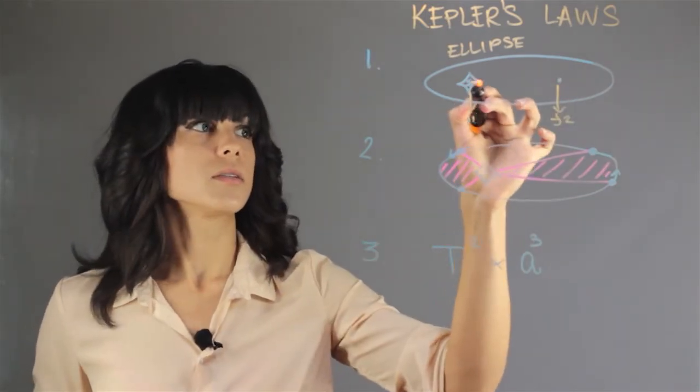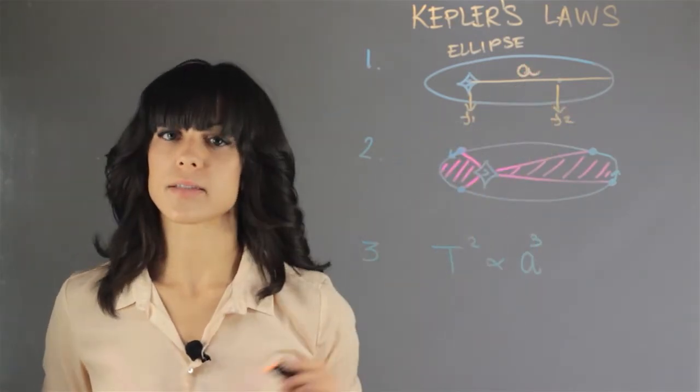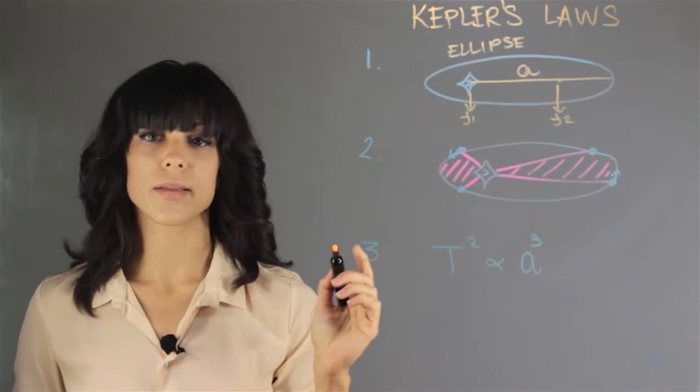The distance from foci 1 to the end is the semi-major axis, denoted by the letter A.